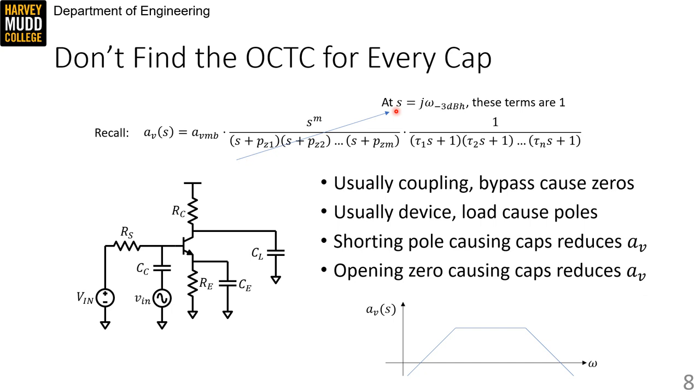We expect those caps will already be shorted at ω-3dBH, so we should replace them with wires when we find the open circuit time constant. So fine, this is a good thing to know, but it's tricky in practice because we have to learn how to identify which caps cause low frequency pole zero pairs and which caps cause high frequency poles.